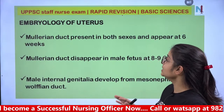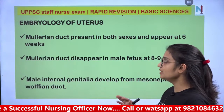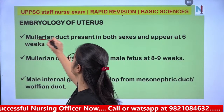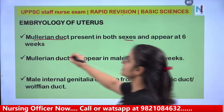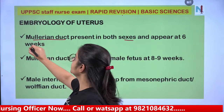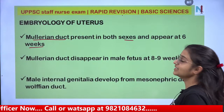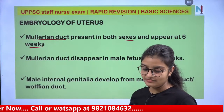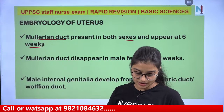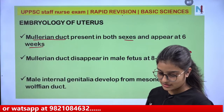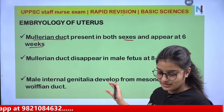We are talking about the embryology of the uterus. The important points are: Mullerian duct is present in both sexes and appears at 6 weeks. Mullerian duct disappears in the male fetus at 8 to 9 weeks.